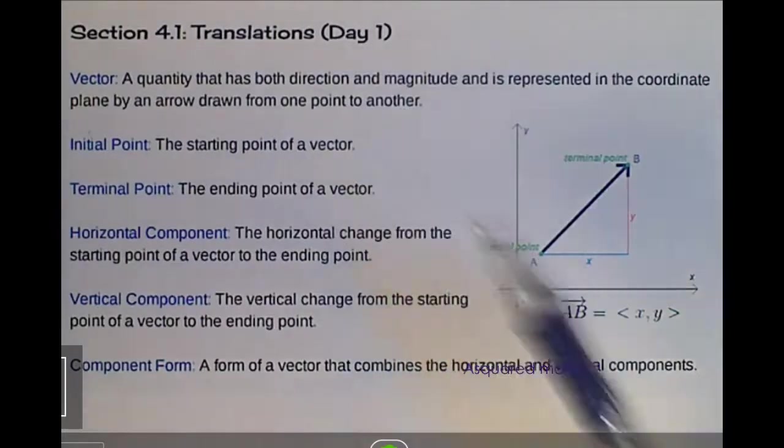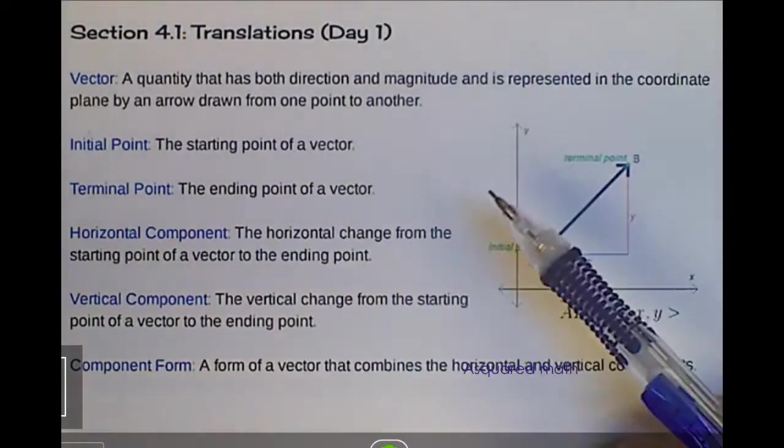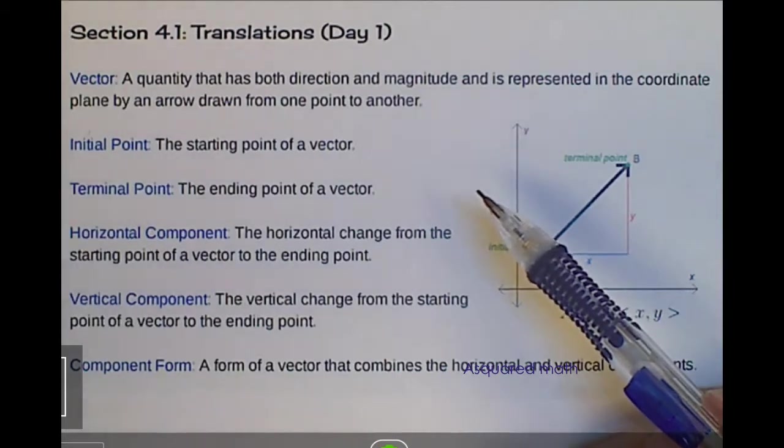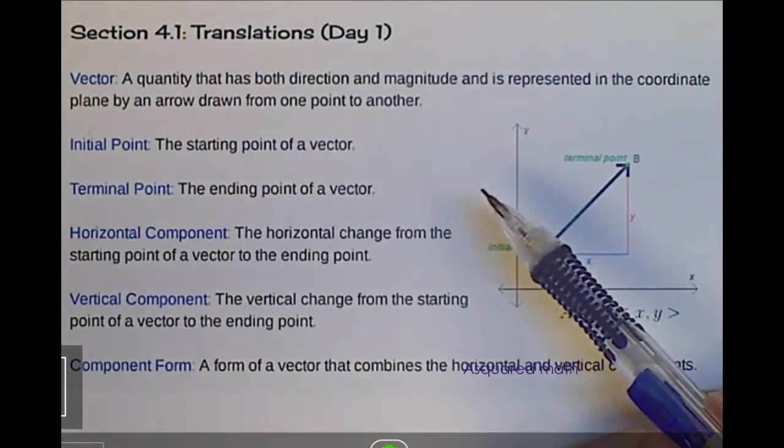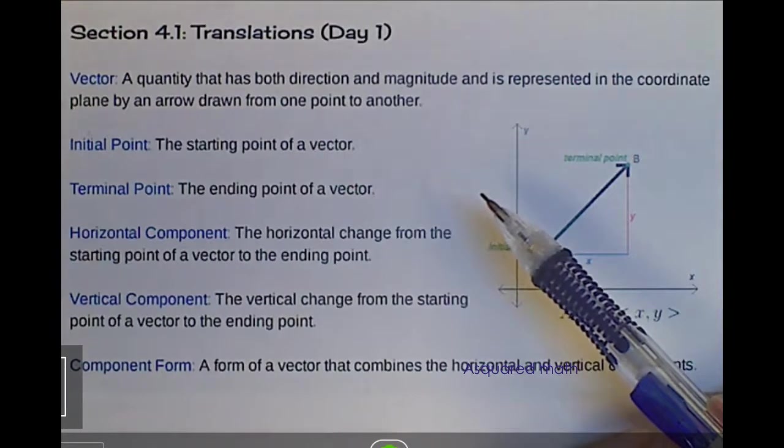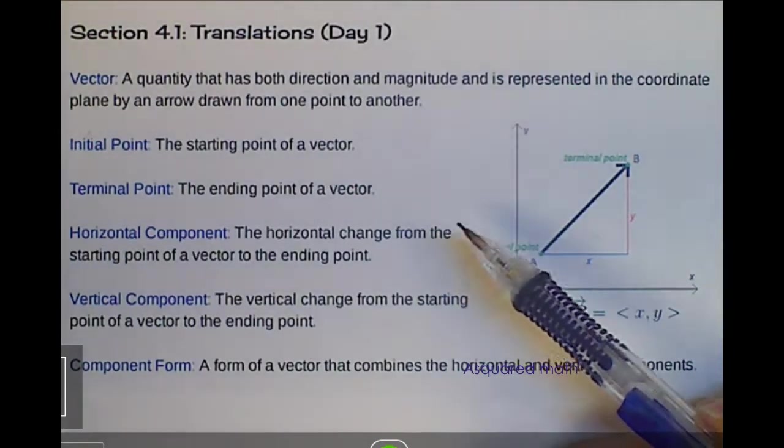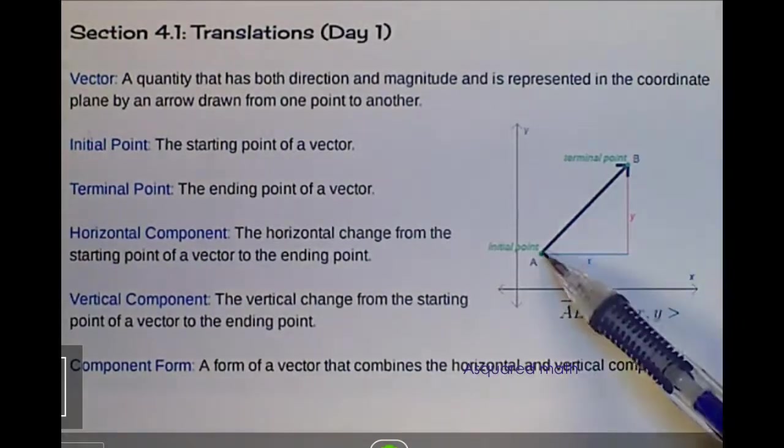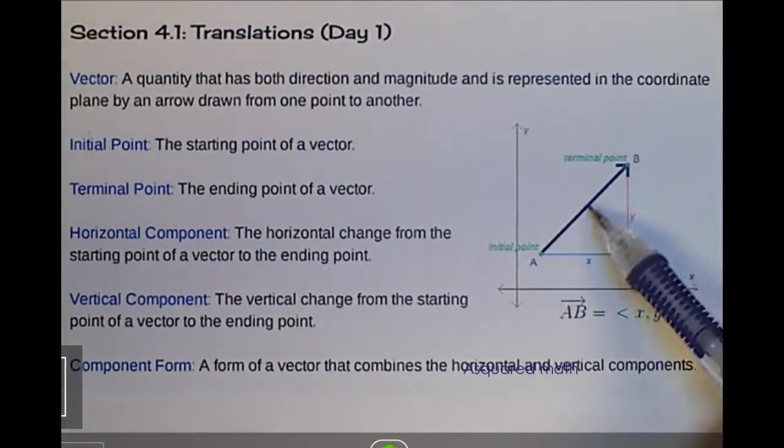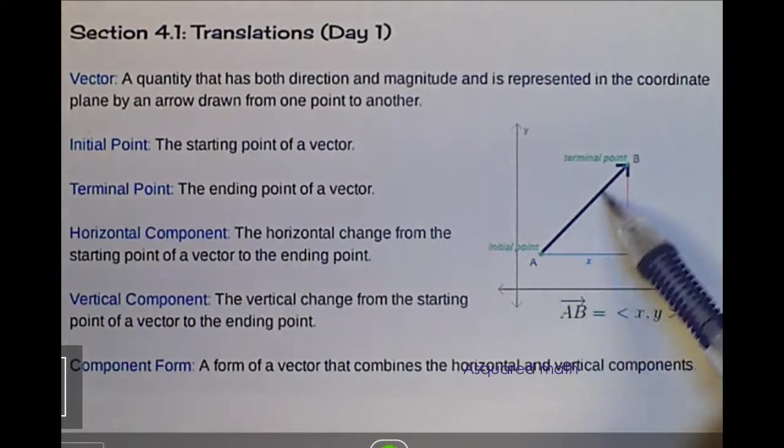Direction means exactly what you think, like north, south, east, west. We're going in some particular direction. And magnitude is basically a number, so how long is this arrow? When we draw an arrow that looks like this, this is considered a vector because it has a length and it has a direction.